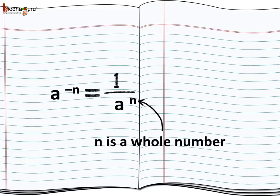So in general, we can say any rational number a to the power minus n, where n is a whole number, is equal to 1 divided by a to the power n.